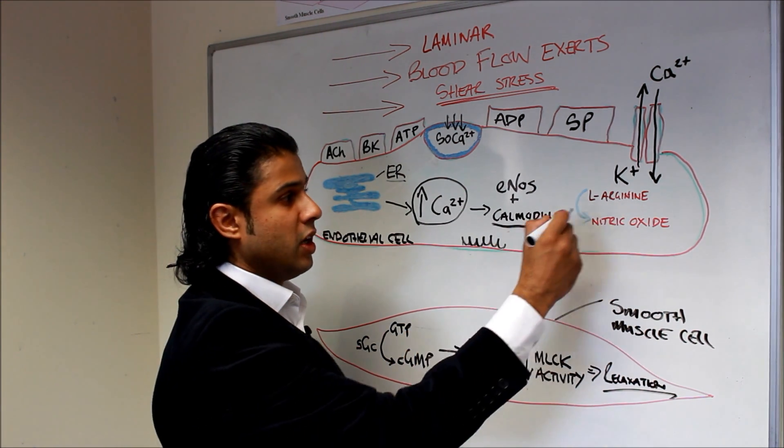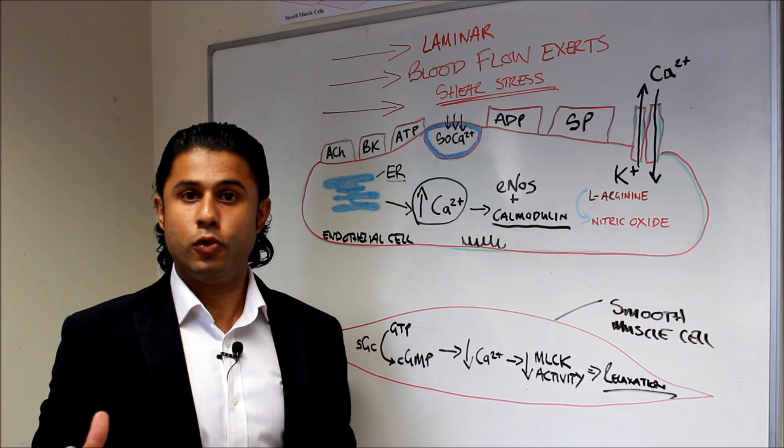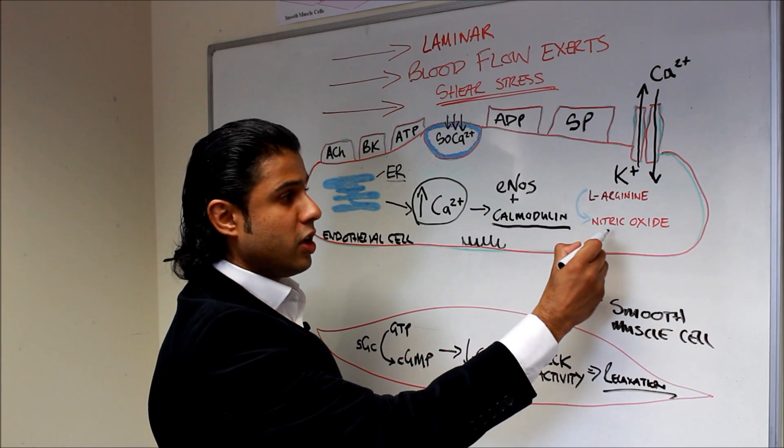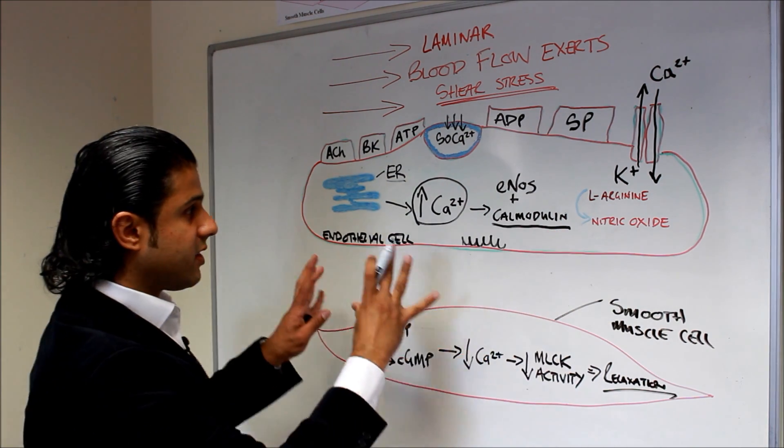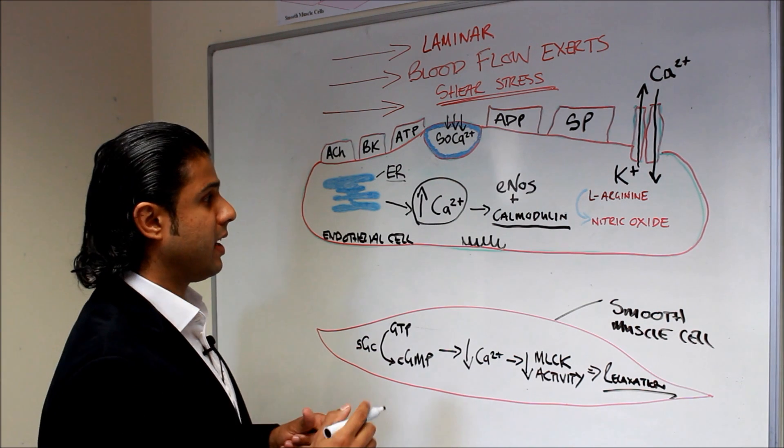So L-Arginine is a protein which is converted in the presence of other cofactors such as BH4 or tetrahydrobiopterin into nitric oxide. So that's in its simplest form how nitric oxide is produced by the endothelial cells.